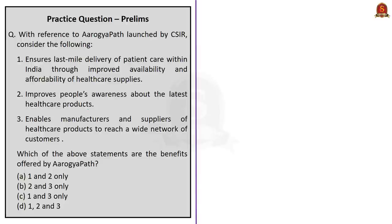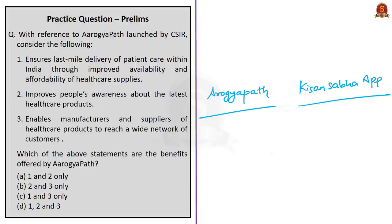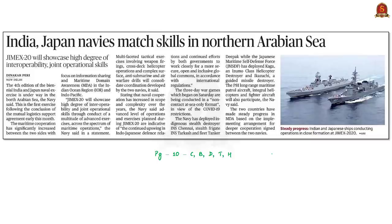This concludes the analysis of the CSIR news article, covering two recent initiatives: the National Healthcare Supply Chain Portal called Arogya Path, and the Kisan Sabha app providing economical and timely logistic support to farmers. The next news article discusses JIMEX — the Japan-India Maritime Exercise — being held in the North Arabian Sea. India-Japan defense and security partnership has evolved significantly over the years, forming an integral pillar of bilateral relations.